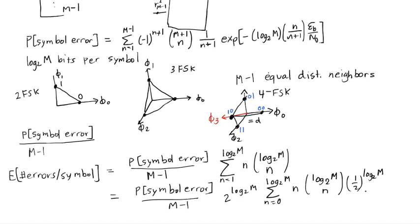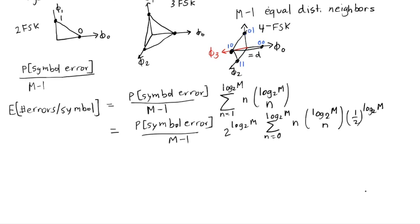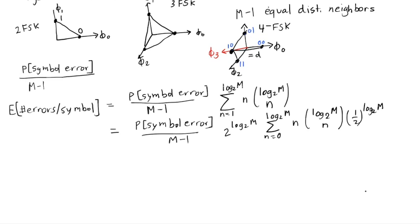And now you might recognize this as the binomial probability. You studied it when you studied, for example, the probability of getting a certain number of heads out of a certain number of tosses. Here the number of tosses is log base 2 of M, and the number of heads would be little n, and the probability of each head or tail would be 1 half.